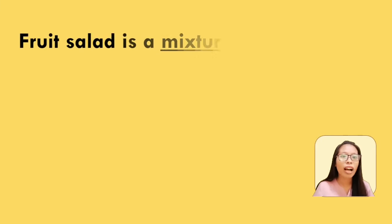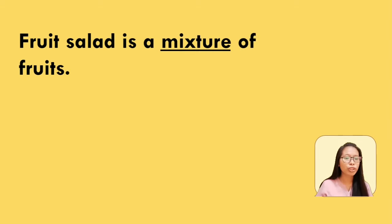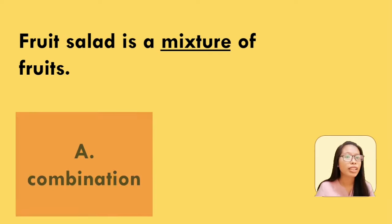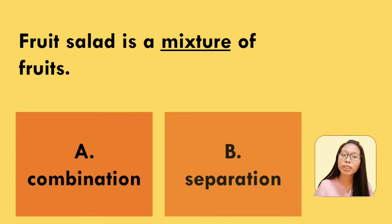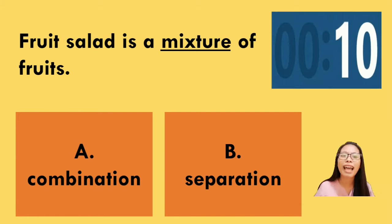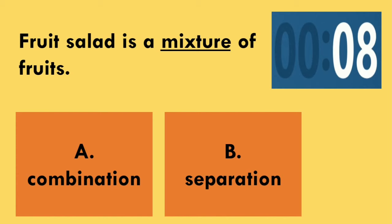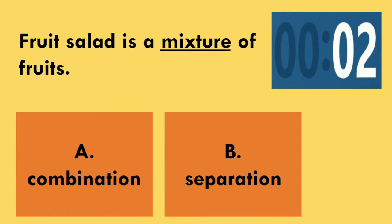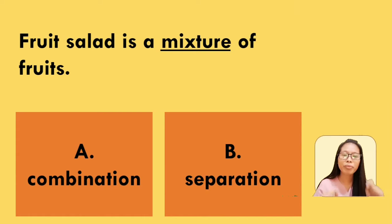Then we have the last one. Fruit salad is a mixture of fruits. The underlined word is mixture. What does it mean? Is it combination or separation? It's combination.